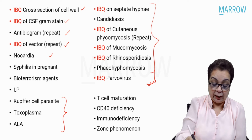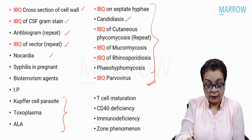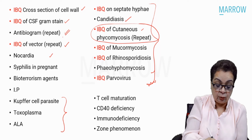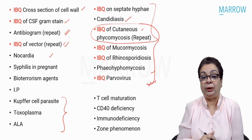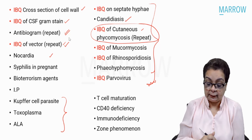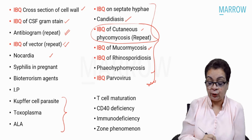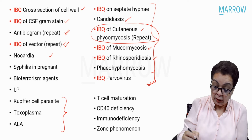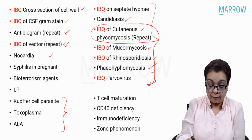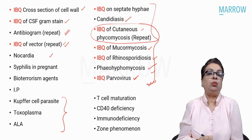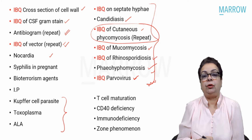From mycology we had questions on septate hyphae, candidiasis, cutaneous phycomycosis — which was a repeat — an image-based question on mucormycosis, rhinosporidiosis, and pheohyphomycosis. Then we had questions from parvoviruses — in fact two questions; one I'm going to discuss and one will be taken up by the pediatrics faculty. And we had four questions from immunology, one of which will be taken up by me and the rest by the pathology faculty.